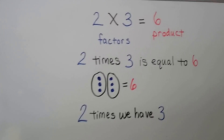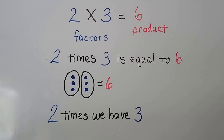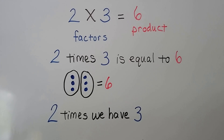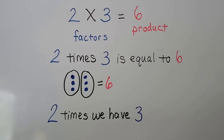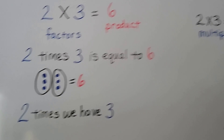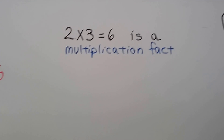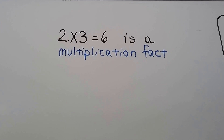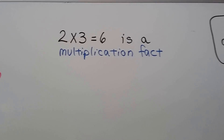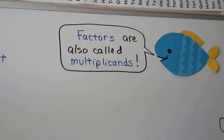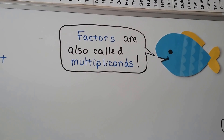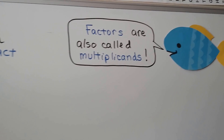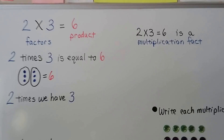Let's do a real quick review. We have 2 times 3 equals 6. The 2 and the 3 are our factors; the 6 is the product. It's telling us that 2 times 3 equals 6 — that we have two groups of 3. 2 times 3 is a multiplication fact. Examples include 2 times 3 equals 6 and 2 times 5 equals 10. Factors are what we multiply together; they're also called multiplicands, just like we call two numbers we add together add-ins.